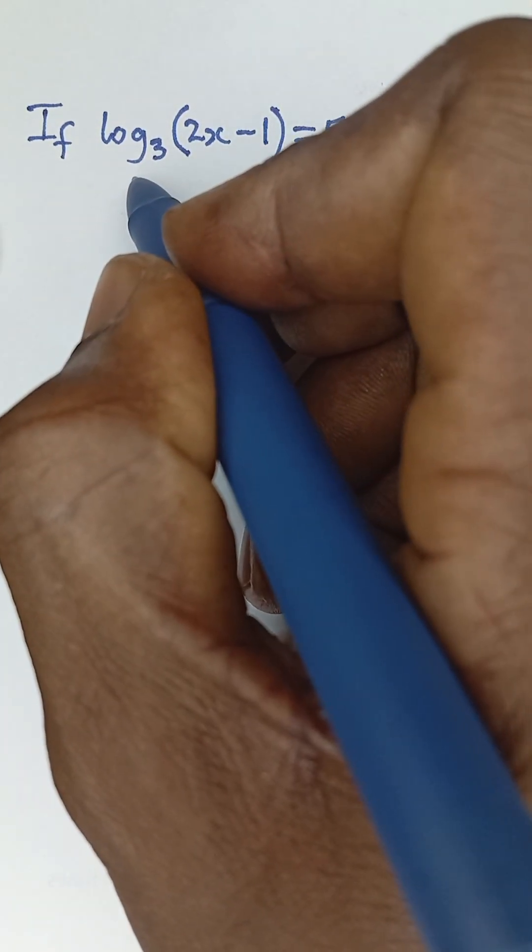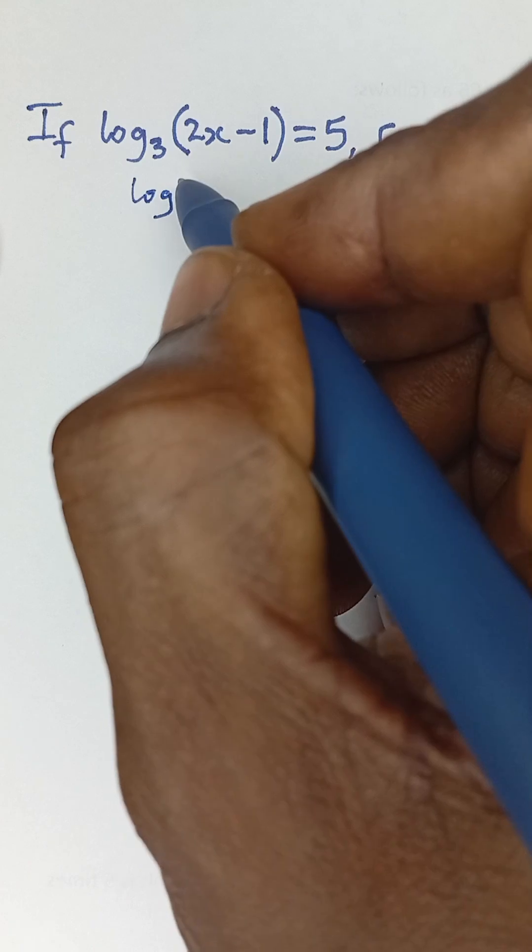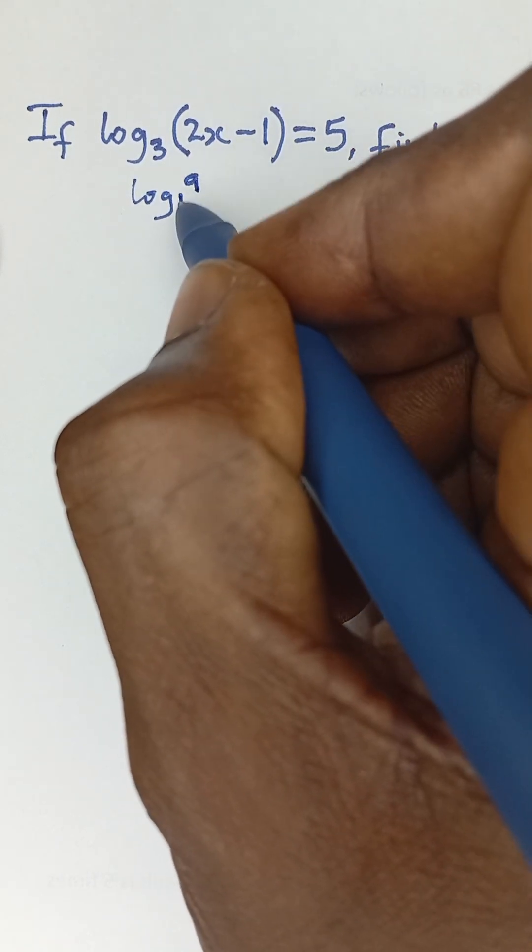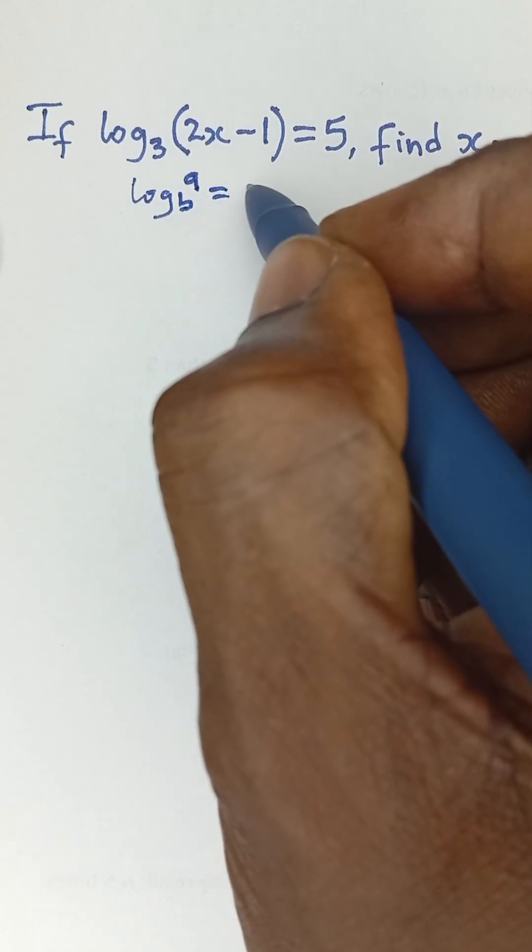Now, let's recall that if you have logarithm expressed like this, let's say log base b of a is equal to c.